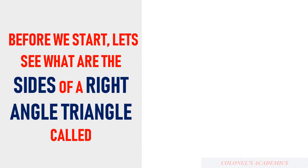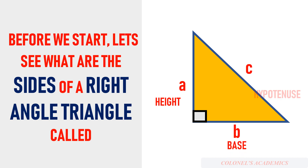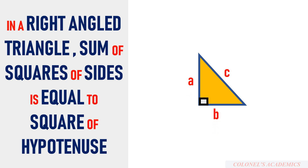Let us see what the sides of a right-angled triangle are called. If you have a right-angled triangle with sides a, b, and c — a is called the height, b is the base of the triangle, and c is the hypotenuse. The Pythagorean theorem says that in a right-angled triangle, the sum of the squares of the sides is equal to the square of the hypotenuse. Very importantly, it is true only for a right-angled triangle.